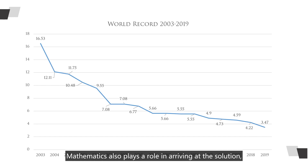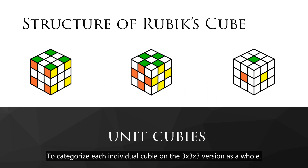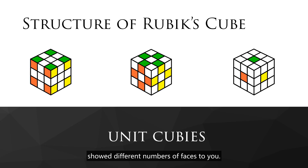Mathematics also plays a role in arriving at the solution, and frankly, it's not as difficult as some may think. Now let's slow down a bit. I'm going to introduce the structure of the Rubik's cube to you. To categorize each individual cubie on the 3x3x3 version as a whole, we'll call them unit cubies.